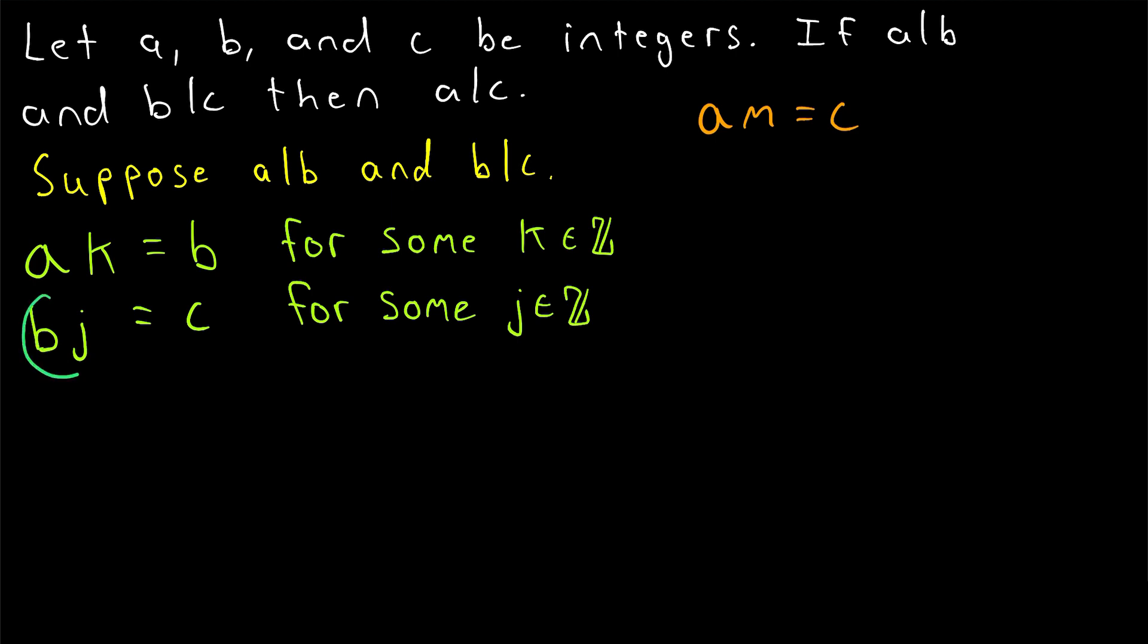Because we know that C is equal to B times J, but we also know that B is equal to A times K. So how about in this equation we replace B with A times K. Doing that substitution, we have that A times K times J is equal to C. Then since multiplication is associative, we could rewrite this as A times K times J is equal to C because the parentheses don't change the product.